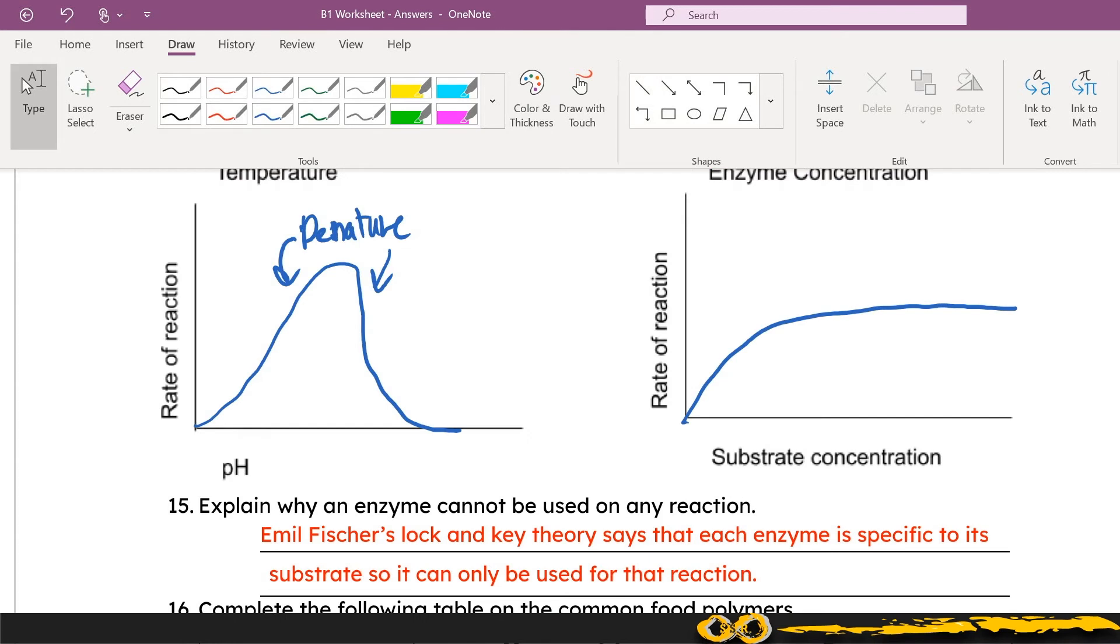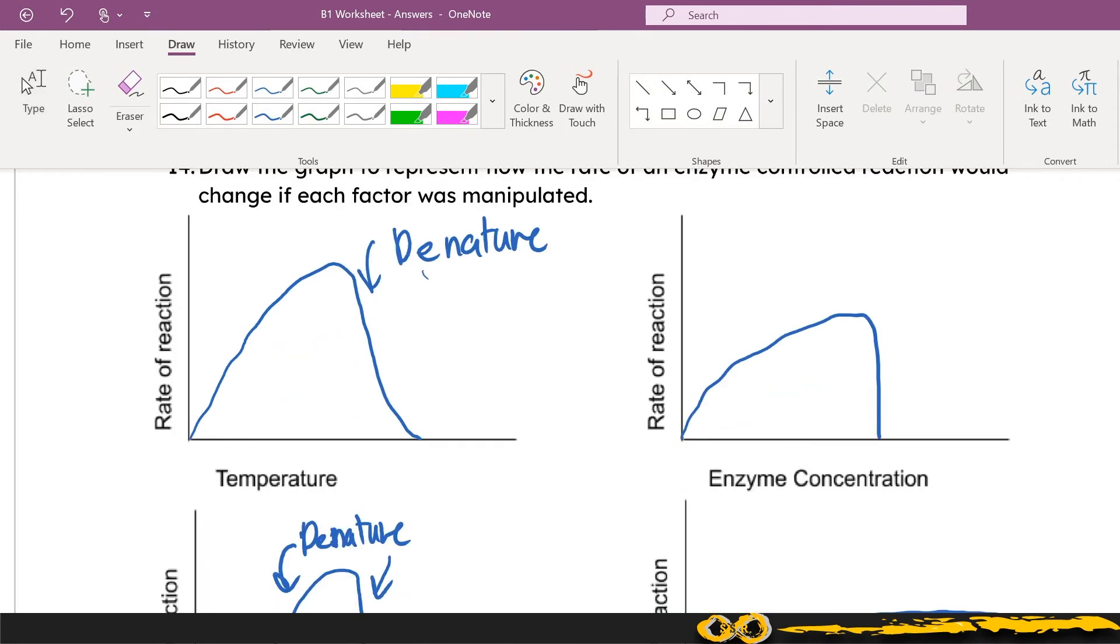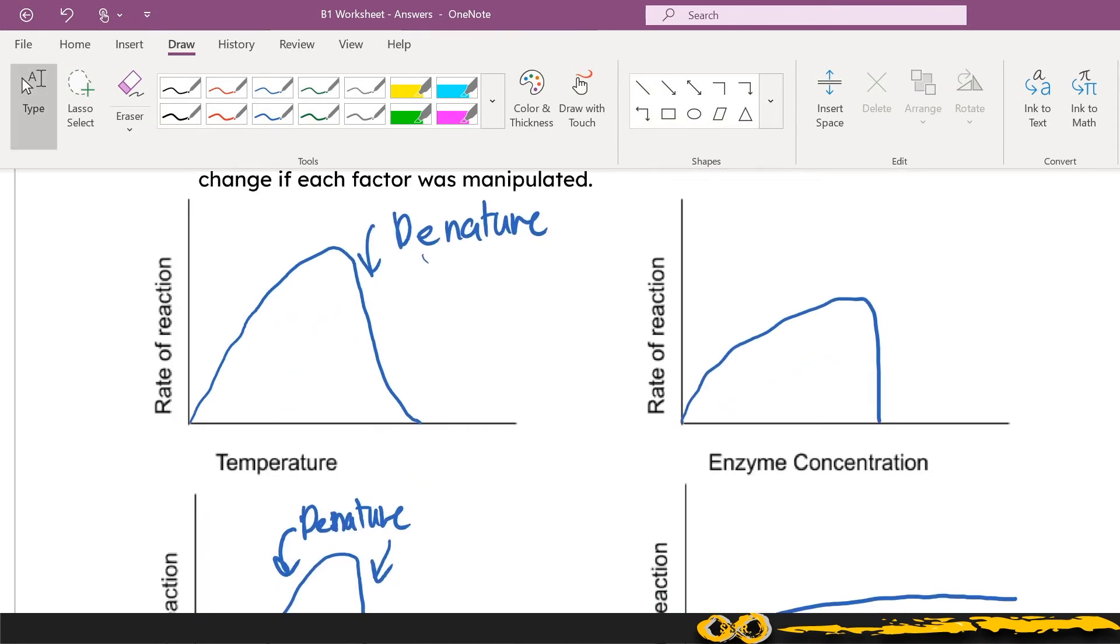When we look at question 14 on these enzyme graphs, remember that you need to be able to explain why the changes that you're seeing in the graphs are occurring. So if you look at the start of the temperature graph you need to think about how particles are going to be moving faster as you add energy or temperature to them, and that increased movement means you will increase the collisions between those particles which will increase the rate of reaction.